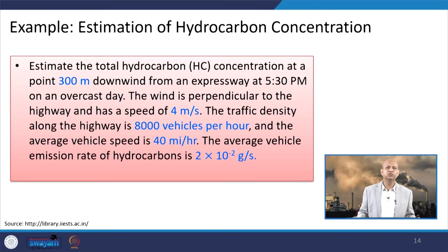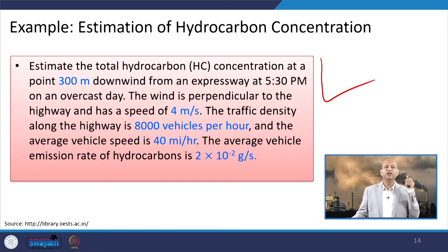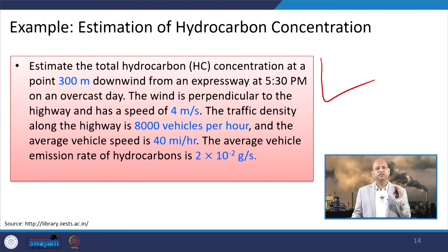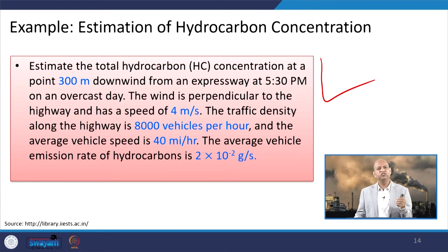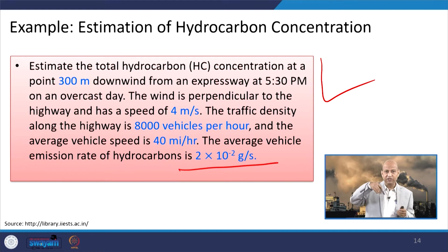For better illustration, we estimate the total hydrocarbon concentration at 300 meters downwind from an expressway at 5:30 PM on an overcast day. The wind is perpendicular to the highway at 4 meters per second. Traffic density is 8,000 vehicles per hour, average vehicle speed is 40 miles per hour, and the average vehicle hydrocarbon emission rate is 2×10⁻² grams per second per vehicle.